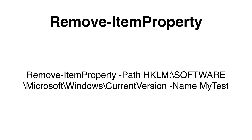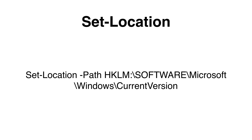If we need to delete an entry in the registry, we can use the Remove-ItemProperty cmdlet. We only need to specify the key path to the value and then the name of the value we would like to delete. If we need to modify a lot of values or keys in the registry, we can set our working location right into the Windows registry — this way we have a lot less typing. I will demonstrate this later.